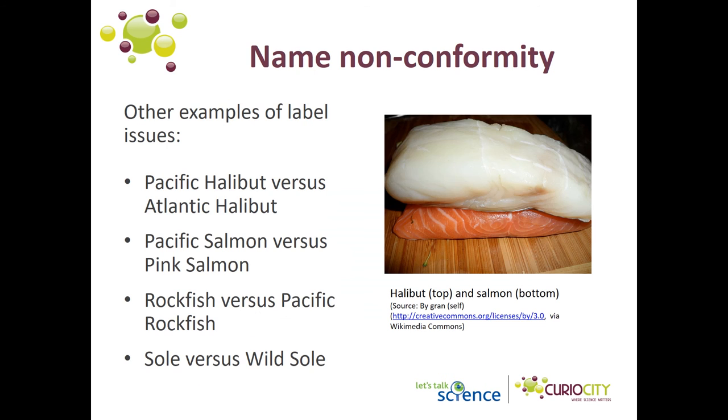Other examples of fish on the CFIA fish list that were mislabeled included types of halibut, salmon, rockfish, and sole.